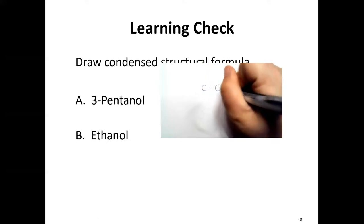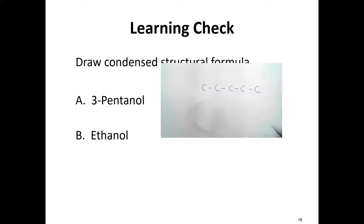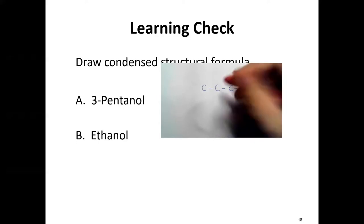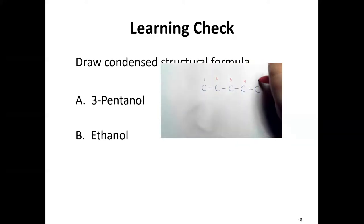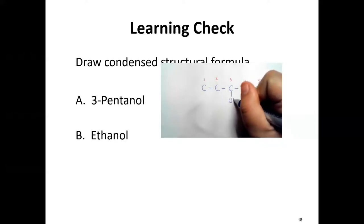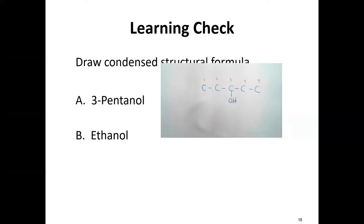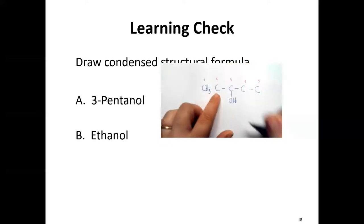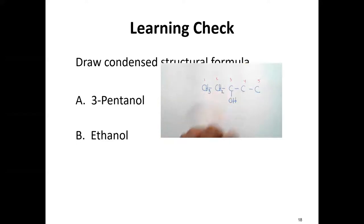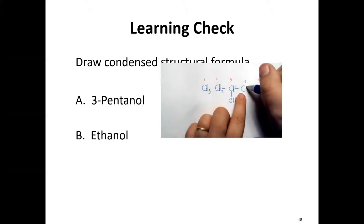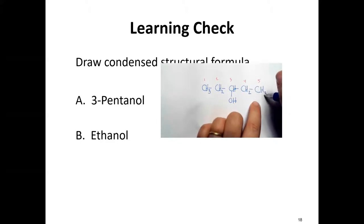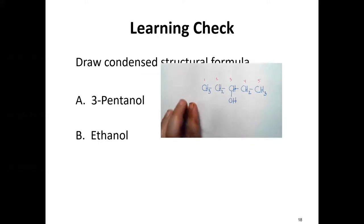Draw one, two, three, four, five carbons, then number them. On the third carbon — hence 3-pentanol — put your OH. Saturate the other carbons so each makes four bonds total, adding hydrogen to all remaining bonds. The end becomes CH3, next is CH2, the middle is CH (with the OH), then CH2, and CH3 again — that's 3-pentanol.